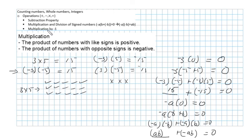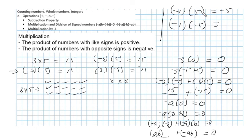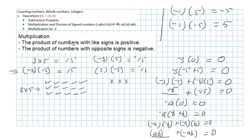Note that when you multiply by negative 1, you get the opposite. So negative 1 times 5 gives minus 5, and negative 1 times negative 5 gives 5. You can use this fact to get the opposite of a number. For division, the rule is the same: the quotient of numbers with like signs is positive, and the quotient of numbers with opposite signs is negative.